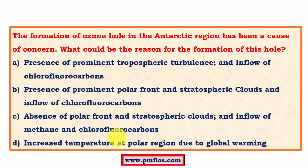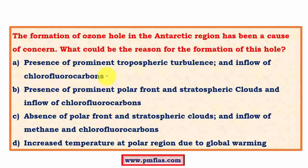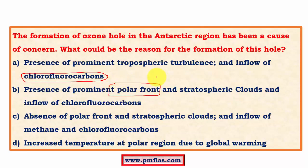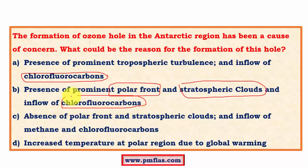Here is a question from previous exams: 'The formation of the ozone hole in the Antarctic region has been a cause of concern. What could be the reason for the formation of this hole?' The options include: (A) presence of prominent tropospheric turbulence and the inflow of chlorofluorocarbons; (B) presence of prominent polar front, stratospheric clouds, and inflow of CFCs. We know that CFCs are the major reason behind ozone depletion.